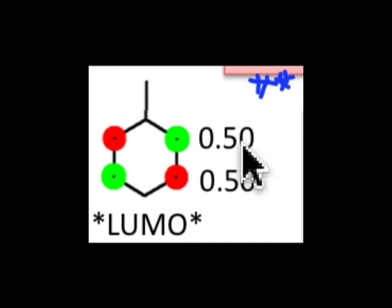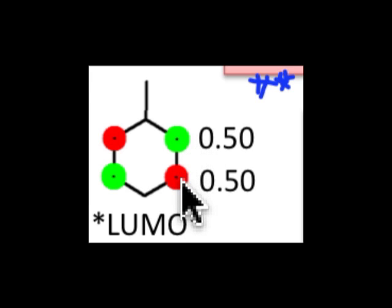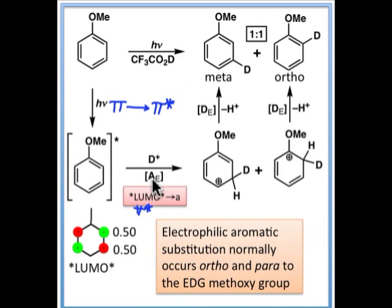Here are the SHMO coefficients. This is the methoxy group — this atom is represented as an O2 in SHMO — and we see equal coefficients on the carbon atoms that are ortho and meta to that methoxy group, so that in the Ae step, the nucleophilic pi star is going to equally add a proton to the meta position or to the ortho position, leading to the products that are observed.